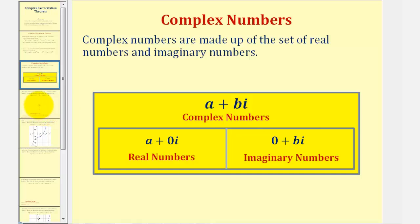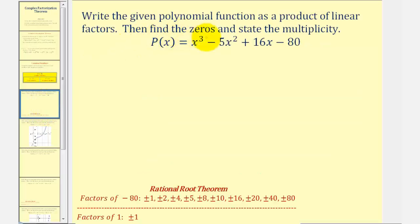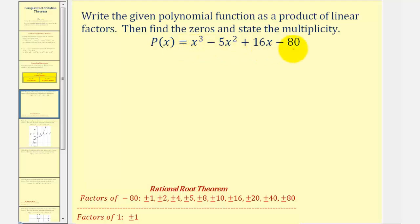Let's take a look at our first example. We want to write a degree three polynomial function as a product of linear factors, or factors of degree one, and then find the zeros and state the multiplicity of each. From the rational roots theorem, if this polynomial has real rational roots, they must be a ratio of the factors of the constant term — negative eighty — to the factors of the leading coefficient, which is one.